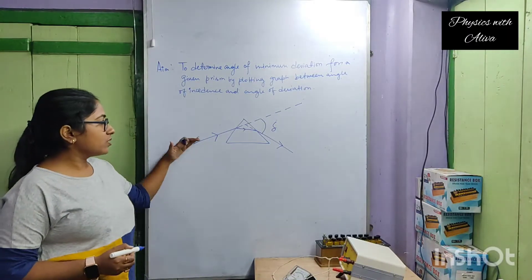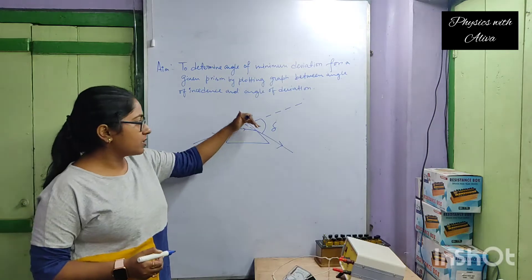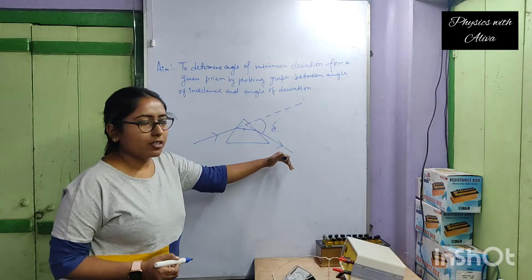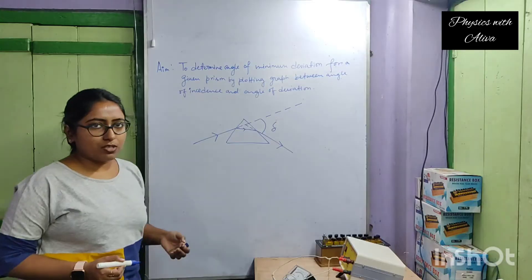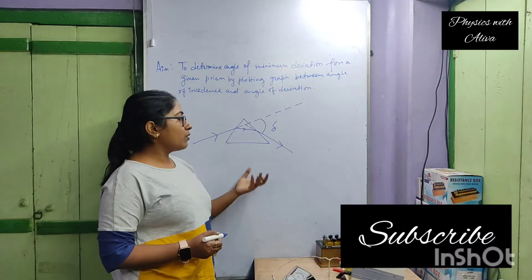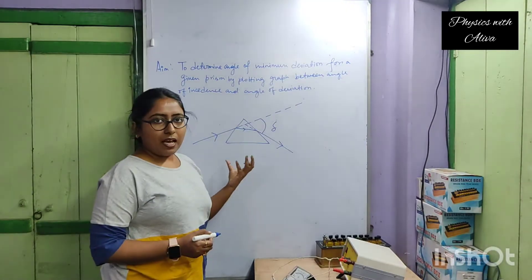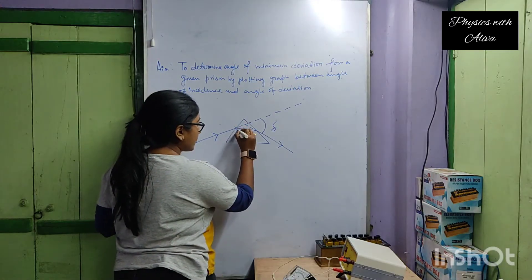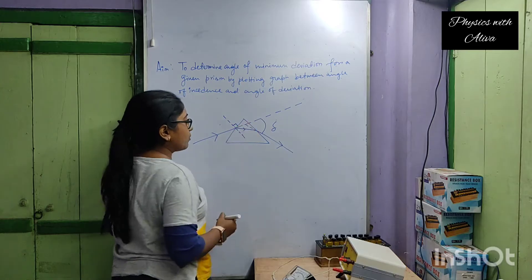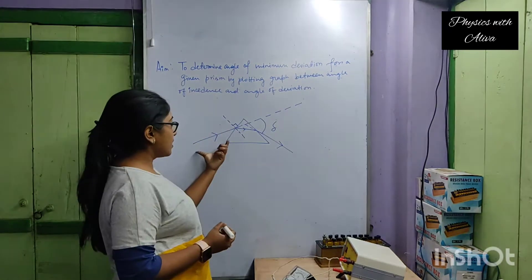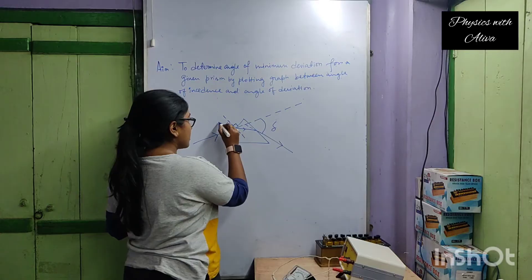If the prism is not there, the ray will pass straight. Due to the presence of the prism, the ray bends to a different path. So the angle between the emergent ray and the incident ray is known as the deviation. We have to measure this angle of deviation for different incident angles. If we draw a perpendicular on the surface of the prism, then the angle between the incident ray and the perpendicular is known as the incident angle.